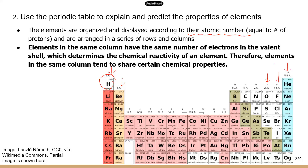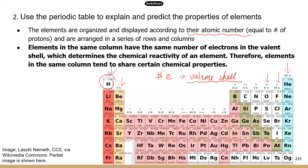The reason is that elements in the same column have the same number of electrons in the valence shell. We talked about this in the previous video for TEAS 6. The number of electrons in the outermost shell, which is the valence shell, determines the chemical properties of an element.